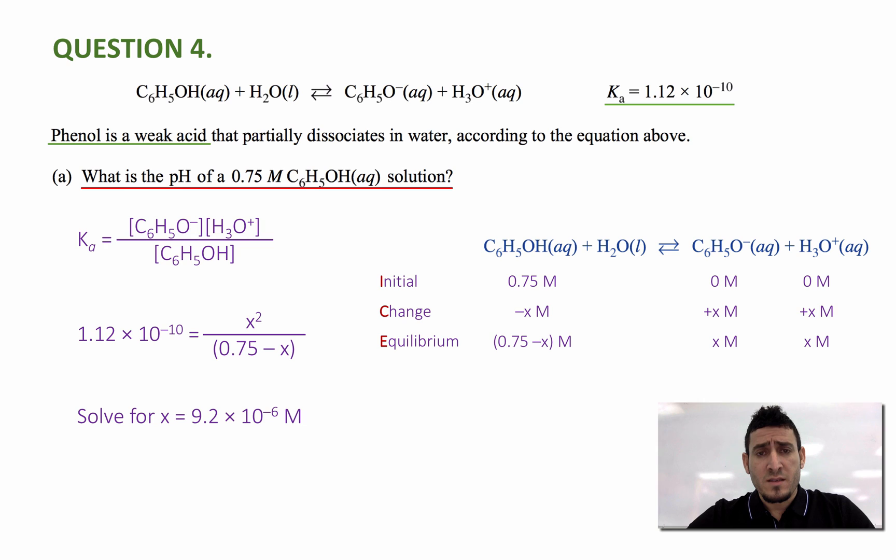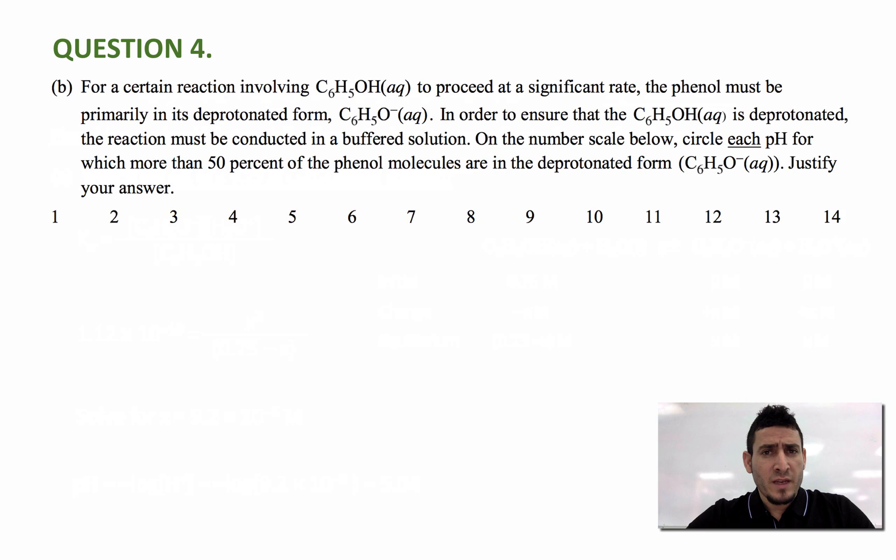This X is equal to the concentration of the hydronium. So I can say pH, which is equal to minus log of H+, equals minus log base 10 of 9.2 times 10 to the power minus 6, and the pH will be equal to 5.04. Let's move on to the next part.